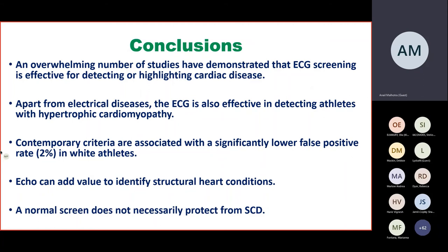In conclusion, there have been an overwhelming number of studies demonstrating that ECG screening is effective for detecting cardiac disease. Apart from electrical diseases, the ECG is effective in detecting athletes with cardiomyopathies — most commonly hypertrophic cardiomyopathy. Contemporary criteria are associated with a significantly low false positive rate amongst white athletes and an acceptable false positive rate amongst black athletes. Echocardiograms and cardiac MRI can add value to identify structural heart disease, although they come with logistical barriers. A normal screen doesn't necessarily protect from sudden cardiac death, and therefore adequate secondary prevention should always be made available for athletes irrespective of their primary prevention strategies being used.